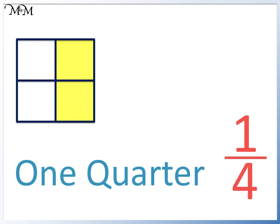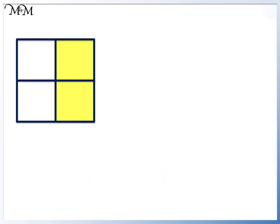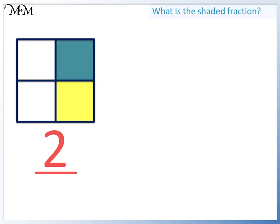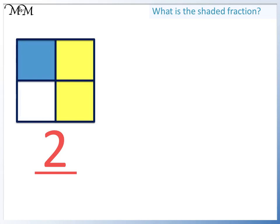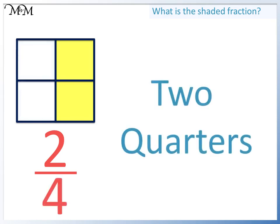We will shade in another quarter. What is the shaded fraction now? We have two parts shaded in. This is out of one, two, three, four parts. We call this fraction two quarters.